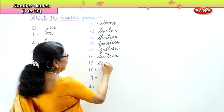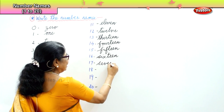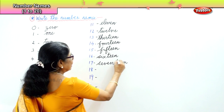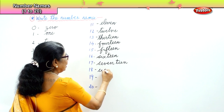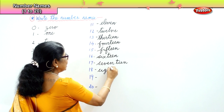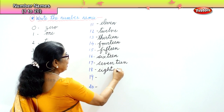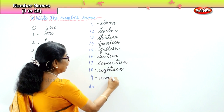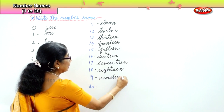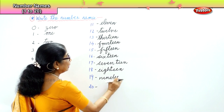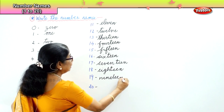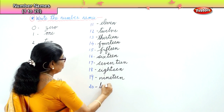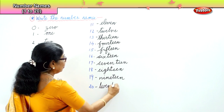17 — S-E-V-E-N-T-E-E-N. 17. 18 — E-I-G-H-T-E-E-N. 18. 19 — N-I-N-E-T-E-E-N. 19. And 20 — T-W-E-N-T-Y.